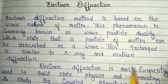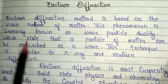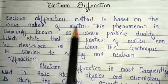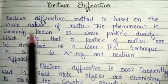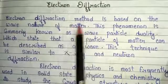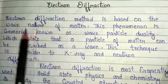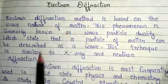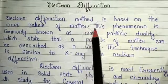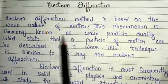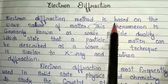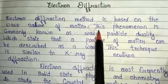So what is electron diffraction? The basic introduction is that the electron diffraction method is based on the wave nature of matter. This phenomenon is commonly known as wave-particle duality. Basically, matter shows two natures: first is wave and second is particle. So electron diffraction method is based on this wave nature of matter, not particle nature of matter.